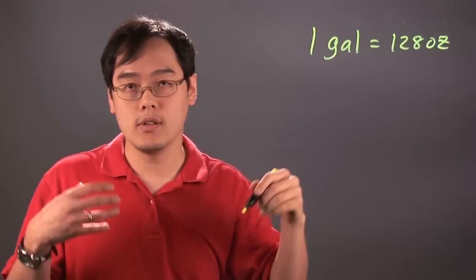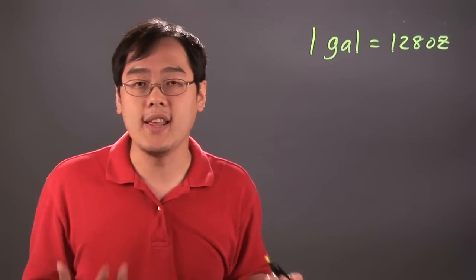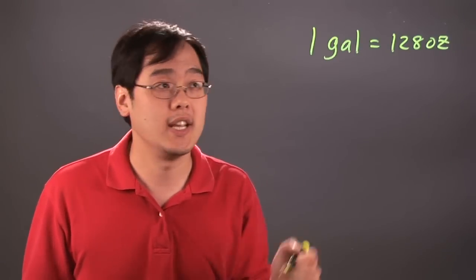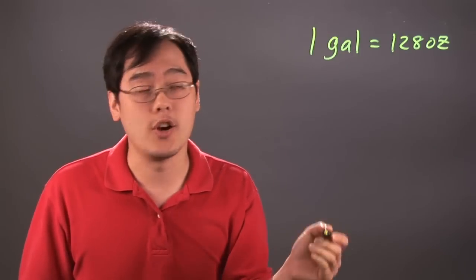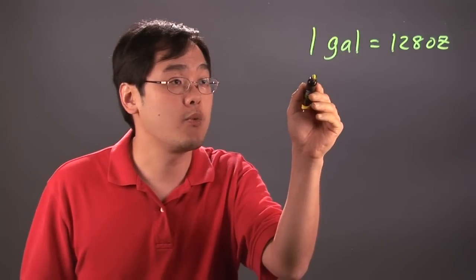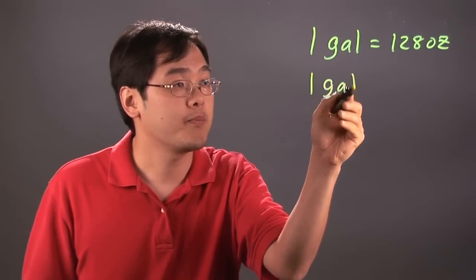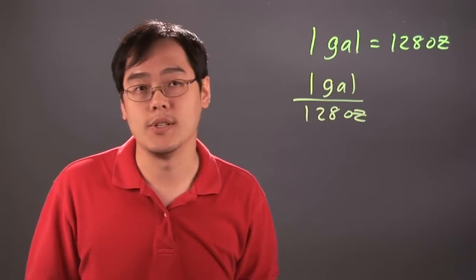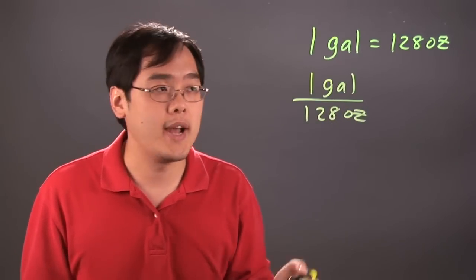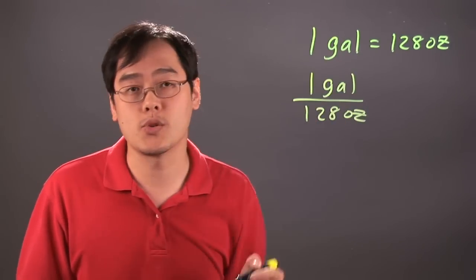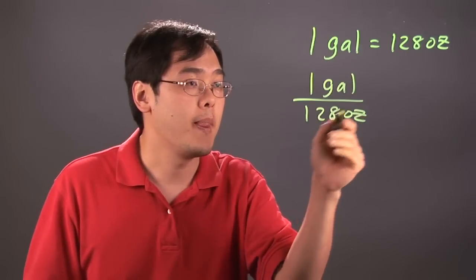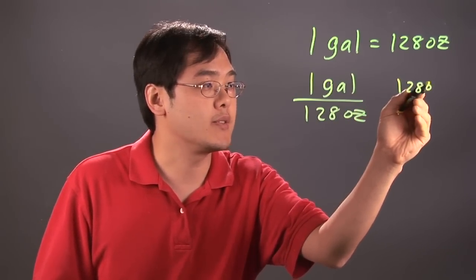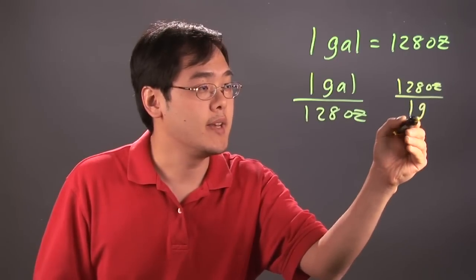Once you know that fact, you can use anything you want when it comes to gallons and ounces, for any conversions that you need. A gallon per ounce ratio is simply written like this: one gallon over 128 ounces. So if you're converting to gallons from ounces, you use this one. Or if you want to convert from gallons to ounces, you use 128 ounces over one gallon.